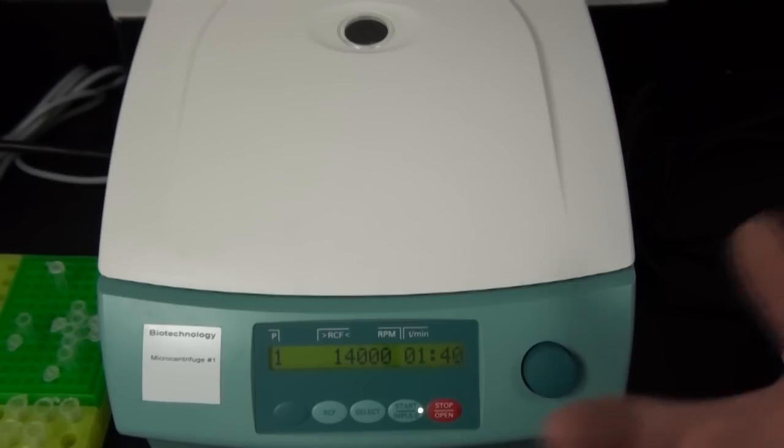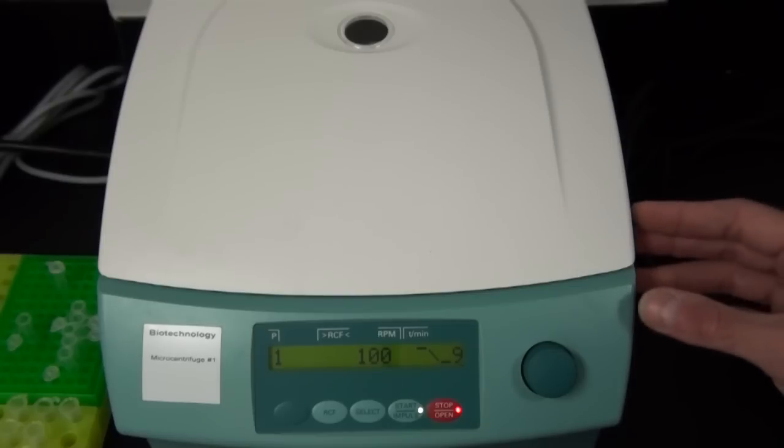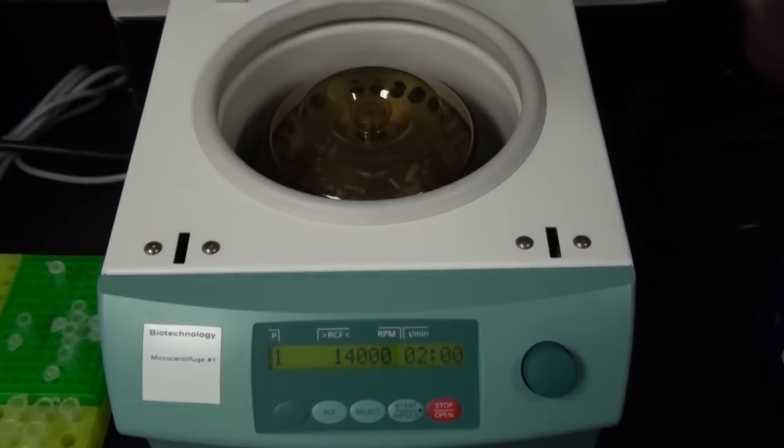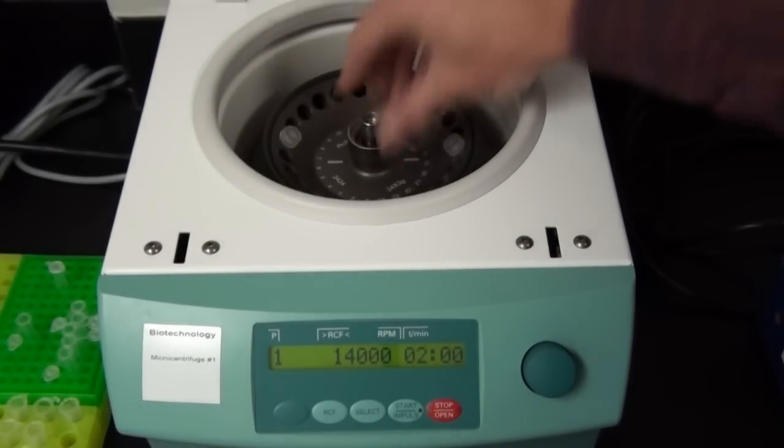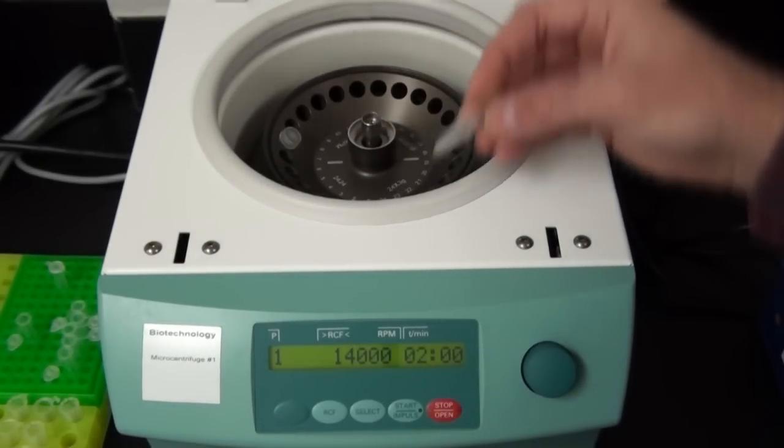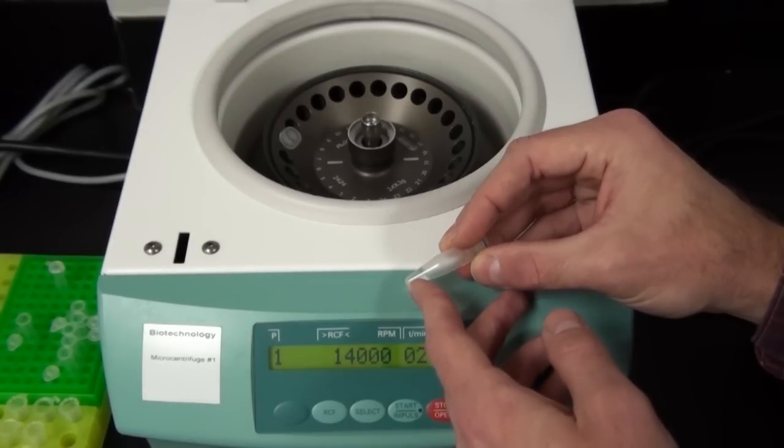After two minutes, it will stop automatically. I'm going to stop a little prematurely here. It will then slow down. On this particular instrument, when it reaches zero, the lid will pop open. Then I can remove my samples. Be careful, you don't want to disturb it. But then you will have your stuff at the bottom of the tube or what we call a pellet.